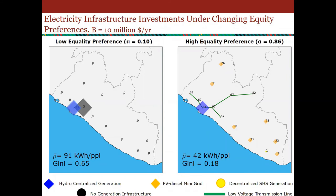A question about the role of energy services: are we looking at supplying people with 240 volts AC, or would it be adequate to run very distributed systems on 24 volts DC, for example?